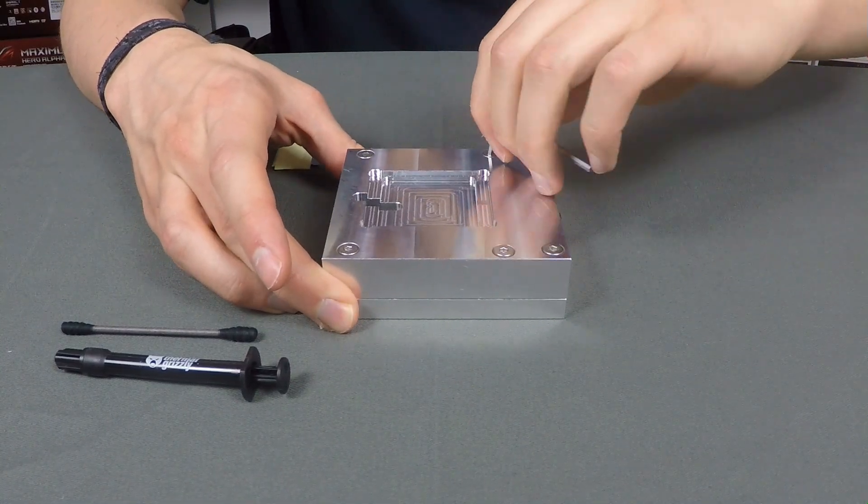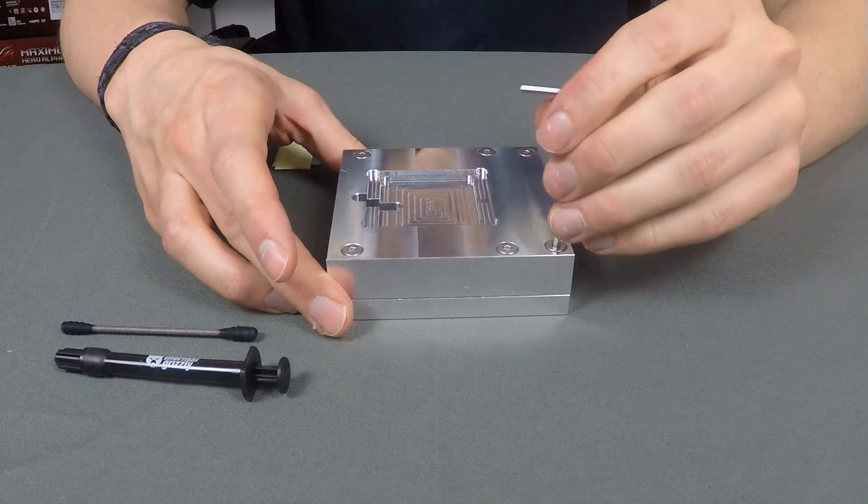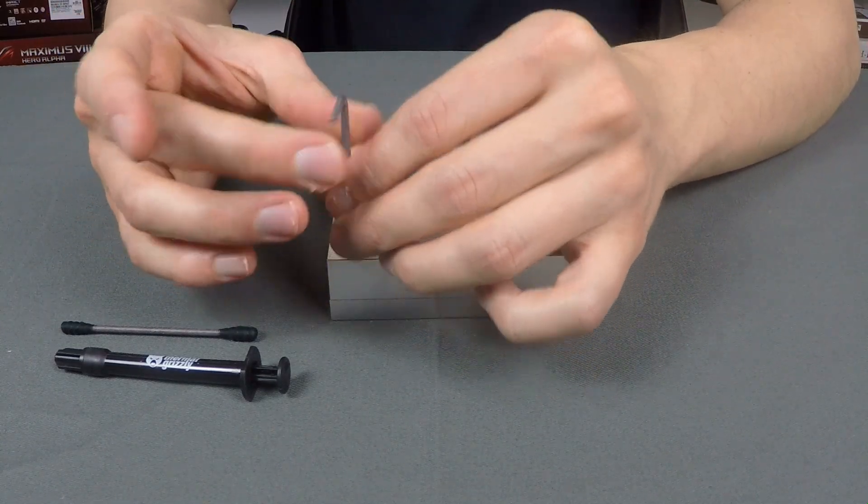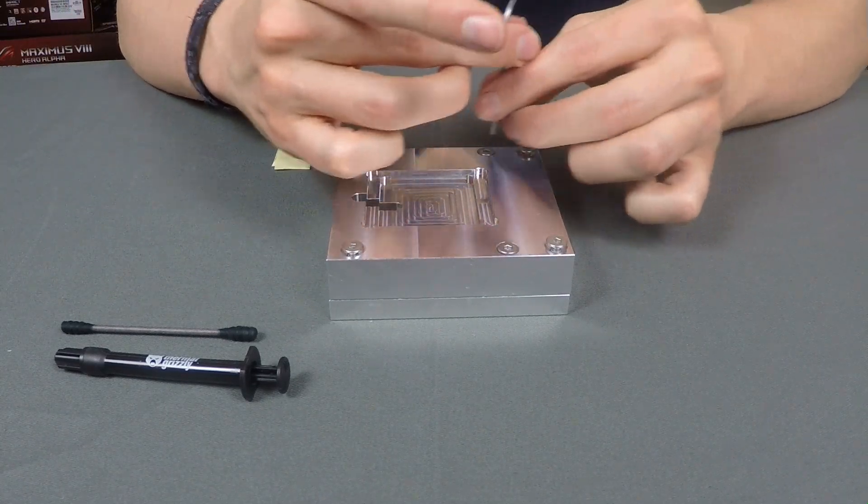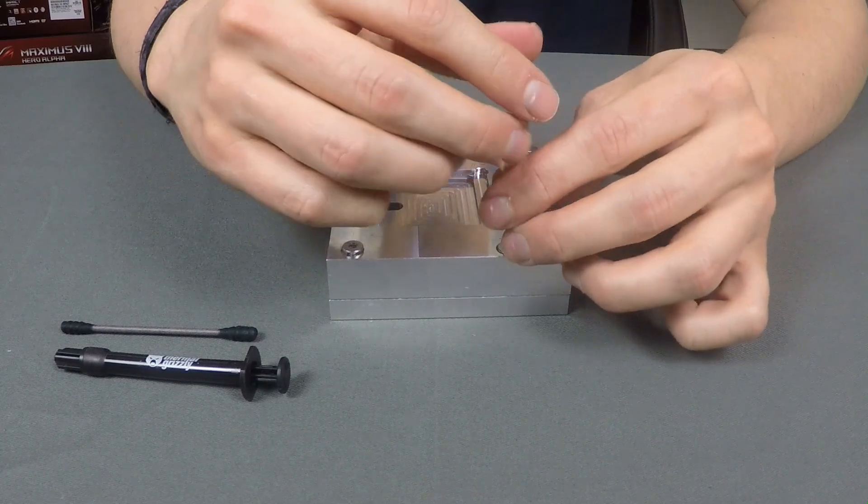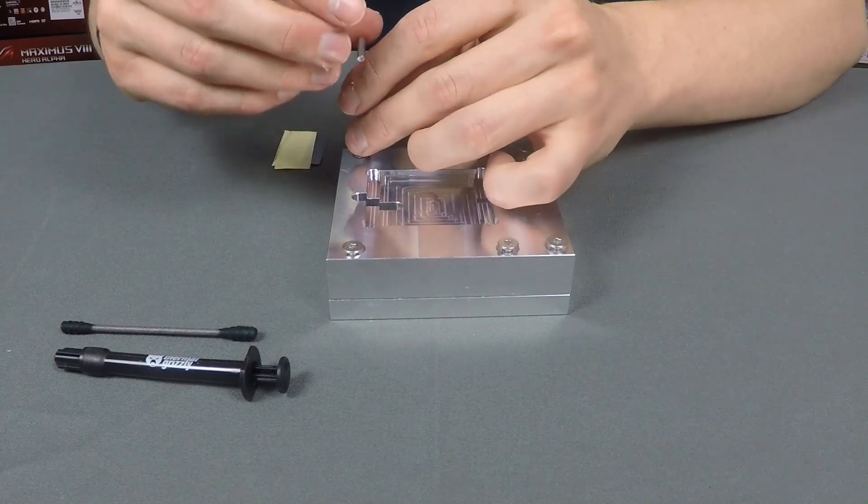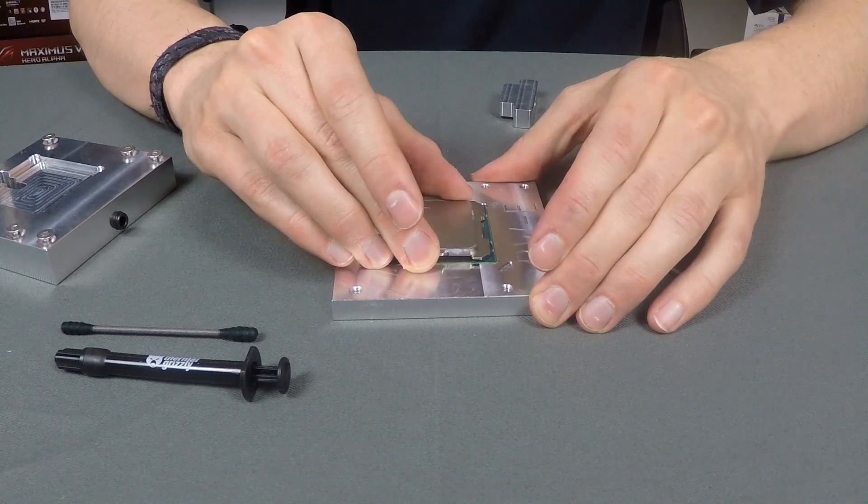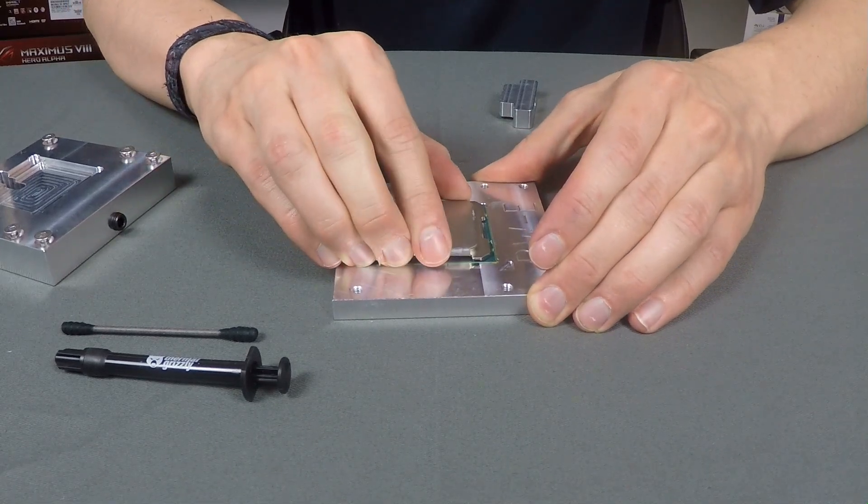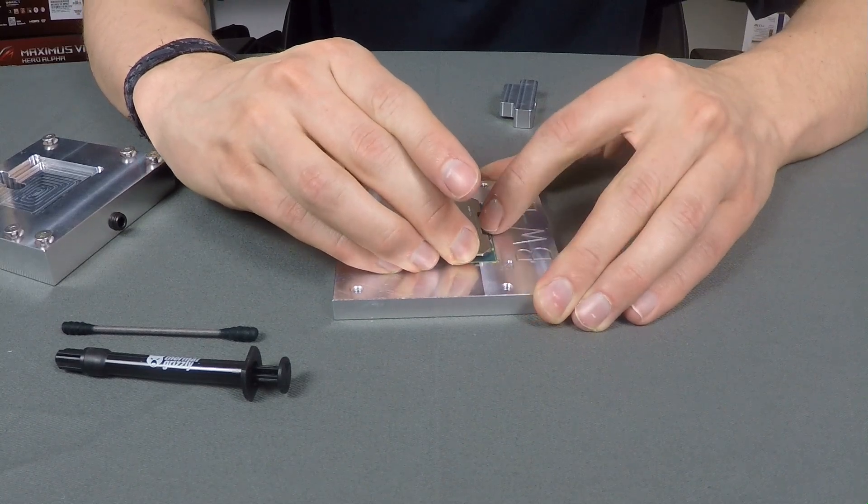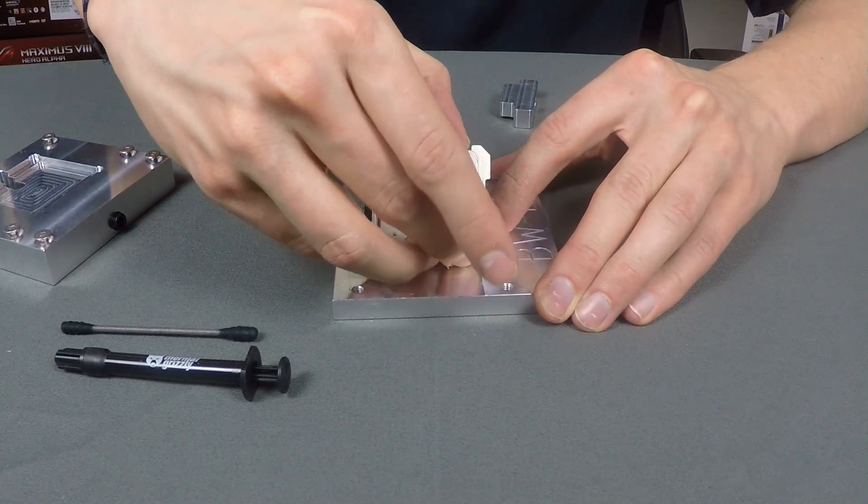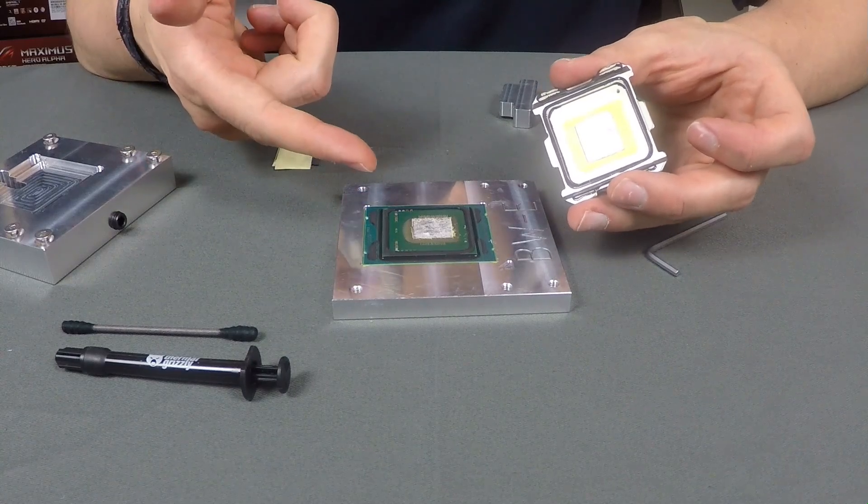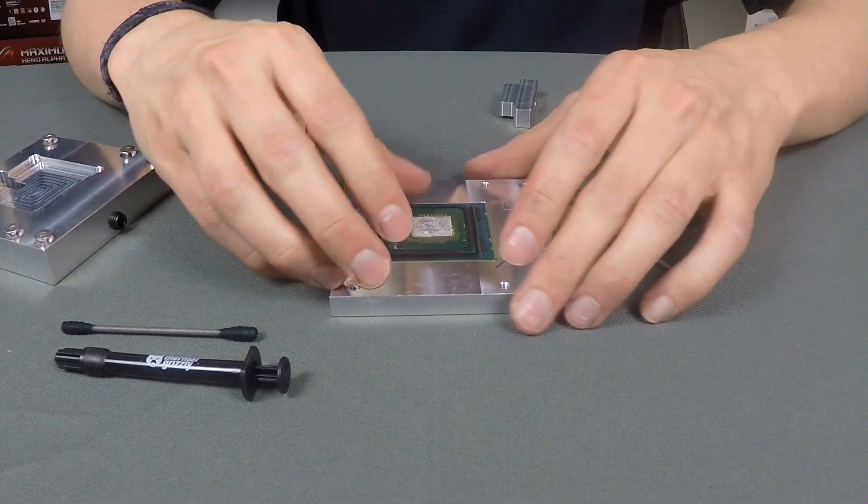Take the hex key again and unmount the screws, and now we will take a look at the perfectly delidded Broadwell-E CPU. It could be that you still have to turn it a little bit to left and right just because of the glue which is still a little bit adhesive, but once you got that going you can take off the IHS really easily. And now you can take a look at the IHS and also the CPU, and you can see everything is still in one piece.